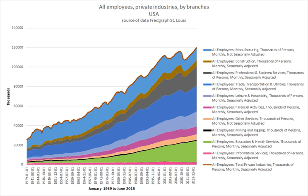An employee does not provide these services as part of an independent business. Employer and managerial control within an organization rests at many levels and has important implications for staff and productivity alike, with control forming the fundamental link between desired outcomes and actual processes. Employers must balance interests such as decreasing wage constraints with a maximization of labor productivity in order to achieve a profitable and productive employment relationship.